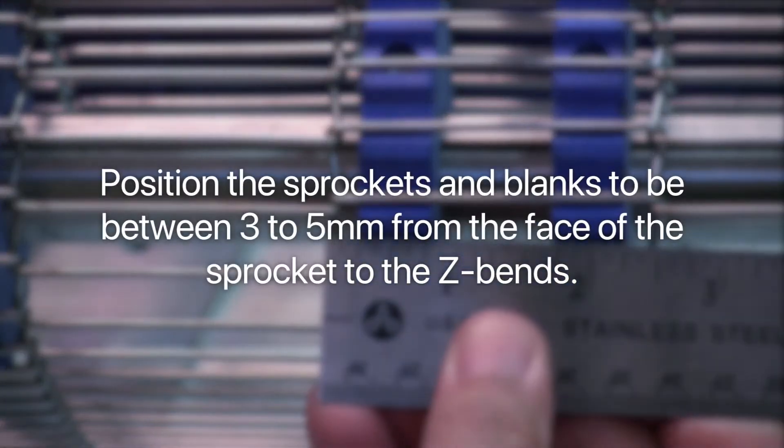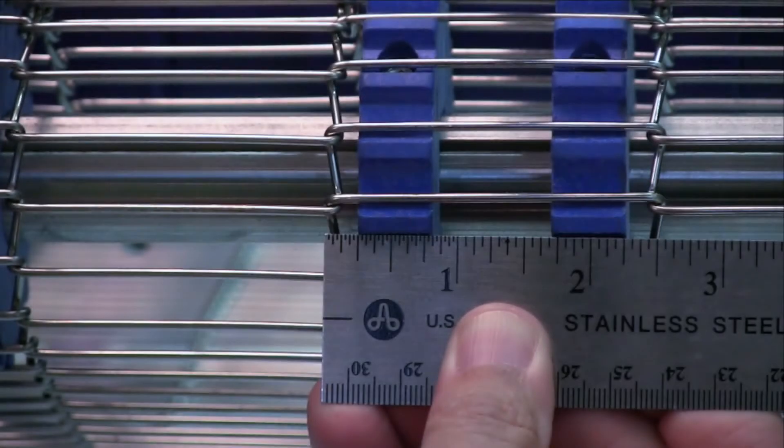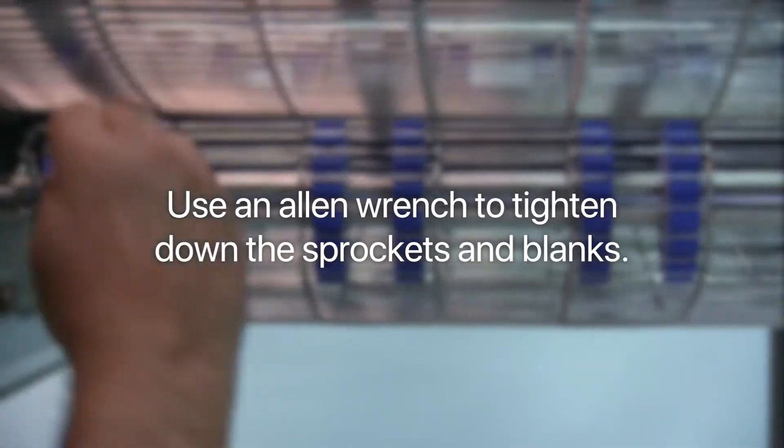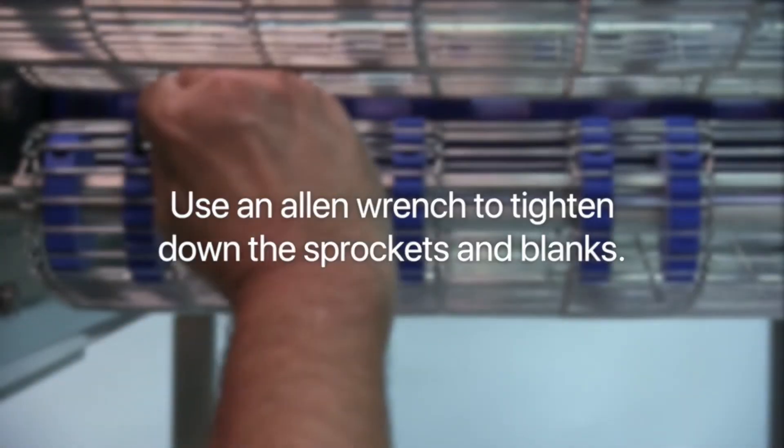Position the drive sprockets and blanks to be between 3 to 5mm from the face of the sprocket to the Z-bends. Use an Allen wrench to tighten down the sprockets and blanks.